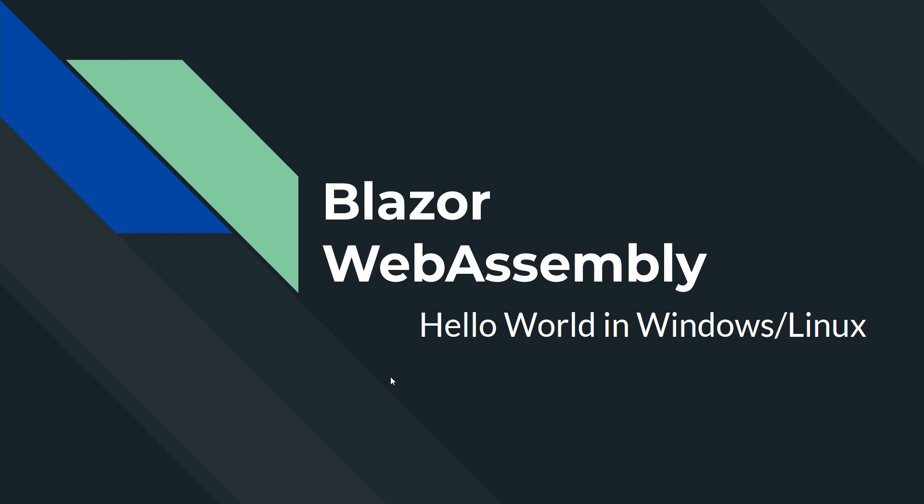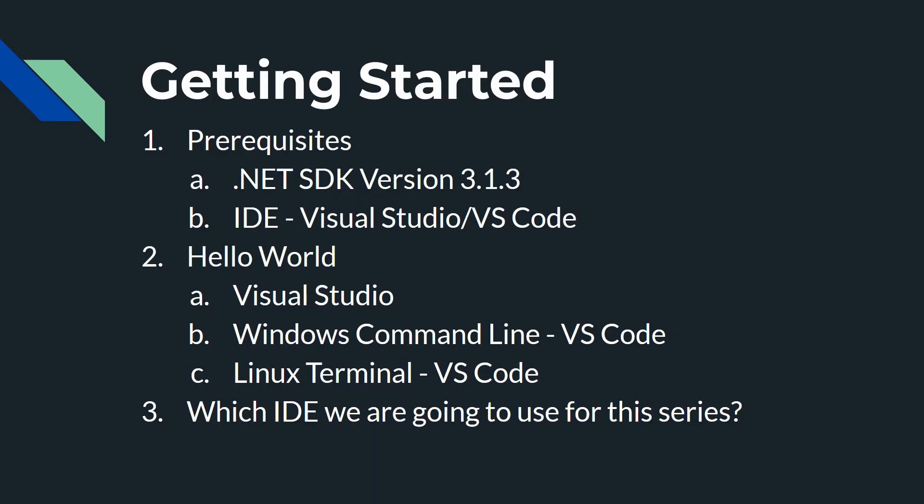Hey guys, in this episode I'm going to talk about how you can create your first Blazor WebAssembly application in Windows and Linux. To get started, you're going to need to install .NET SDK version 3.1.3 or greater. For IDE, I'm going to use Visual Studio and VS Code, but you can use any IDE that you like.